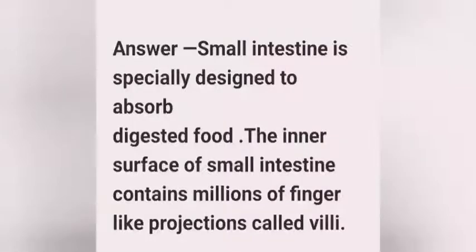How is the small intestine designed to absorb digested food? The small intestine is specially designed to absorb digested food. The inner surface of the small intestine contains millions of finger-like projections called villi. These finger-like projections are called villi, and they help in the absorption of food.